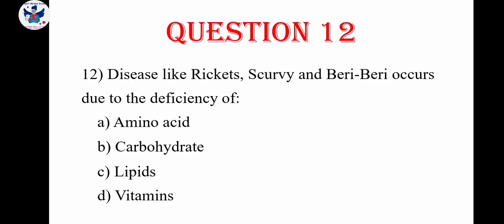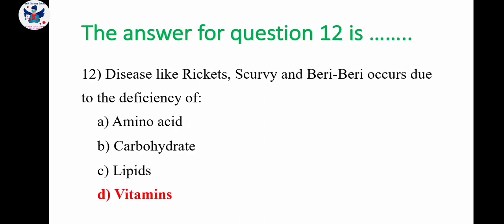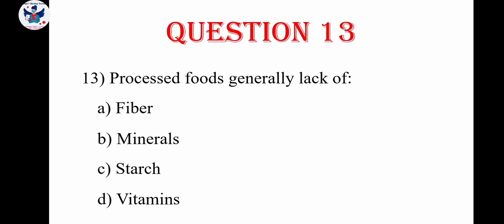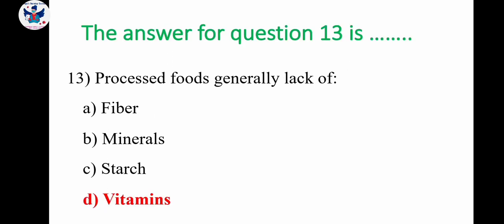Question number 12: diseases like rickets, scurvy, and beriberi occur due to the deficiency of — amino acid, carbohydrate, lipids, or vitamins. The correct answer is vitamins. Question number 13: processed foods generally lack — fiber, minerals, starch, or vitamins. The correct answer is vitamins.